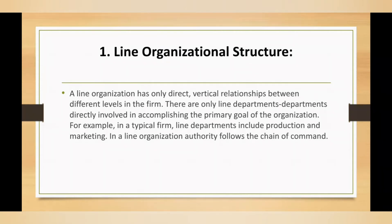Number one is the line organizational structure. This structure is also known as the oldest one — do memorize that the line organizational structure is the oldest. You can also call it military organization, vertical, or hierarchy structure. Military in the sense that it is strict and autocratic — strict rules are followed and authority flows from top to down in a straight line with no extra branches.